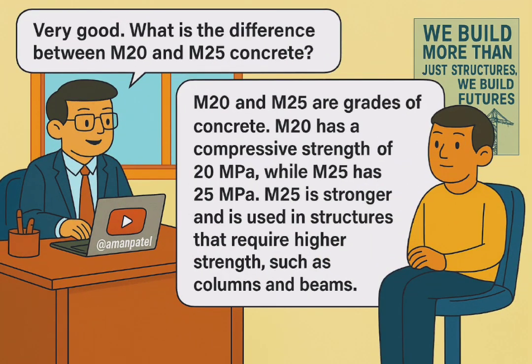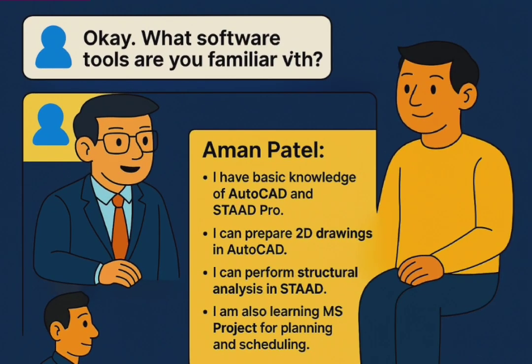Very good. What is the difference between M20 and M25 concrete? M20 and M25 are grades of concrete. M20 has a compressive strength of 20 MPa, while M25 has 25 MPa. M25 is stronger and is used in structures that require higher strength, such as columns and beams.